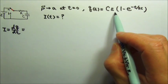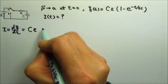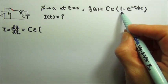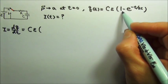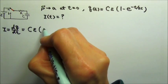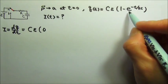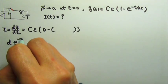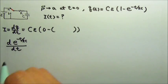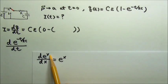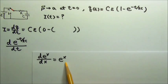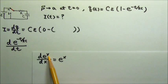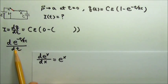CE is a constant coefficient, so we can just keep CE here, and for these two terms we will take the derivative one term at a time. The derivative of one — the derivative of a constant — gives zero. Then we have to take the derivative of the exponential decay term, e to the negative t over RC. We can use d(e^x)/dx = e^x, but these two expressions are not exactly the same, so we have to use the chain rule.